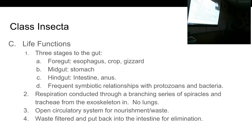Like all arthropods, insects have an open circulatory system. They have a heart that works like a bilge pump — it sucks pooled blood up off the bottom of the animal and squirts it back over the top, letting it filter down. There are no major veins, arteries, or capillaries. It's just a bilge-type system.